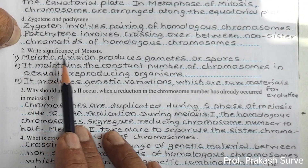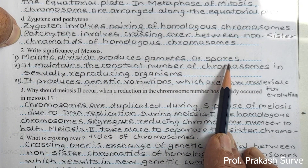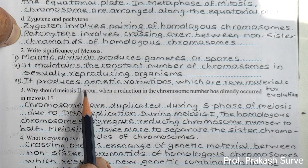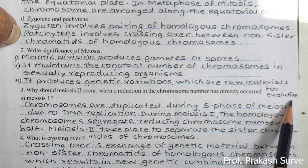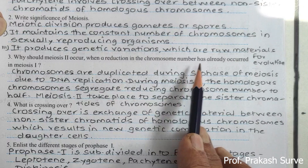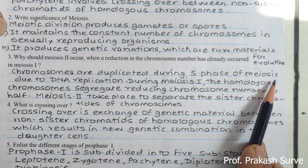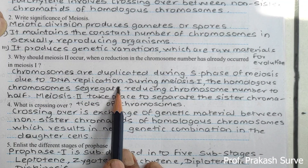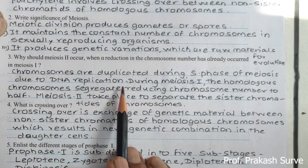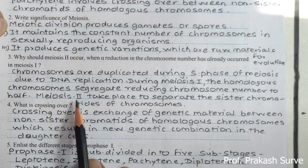The significance of meiosis: meiotic division produces gametes or spores. It maintains the constant number of chromosomes in sexually reproducing organisms. It produces genetic variations, which are the raw material for evolution. As for why meiosis two must occur when reduction has already occurred in meiosis one: the chromosomes are duplicated during the S phase of meiosis due to DNA replication. During meiosis one the homologous chromosomes segregate, reducing the chromosome number to half.